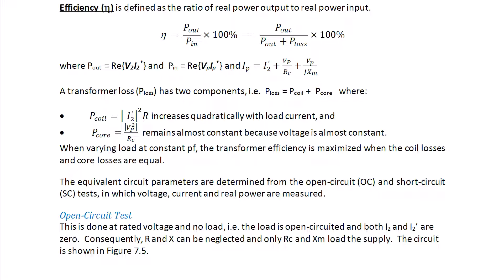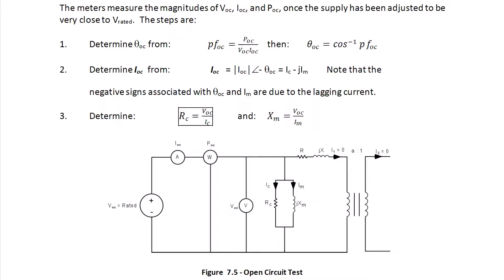The open circuit test is done at the rated voltage and no load, i.e., the load is open-circuited and both I2 and I2 prime are zero. Consequently, R and X can be neglected and only RC and XM load the supply, as in the circuits shown in Figure 7.5. In this circuit, the meters measure the magnitudes of VOC and IOC and POC, and once the supply has been adjusted to be very close to V-rated, we use the following steps to determine RC and XM.